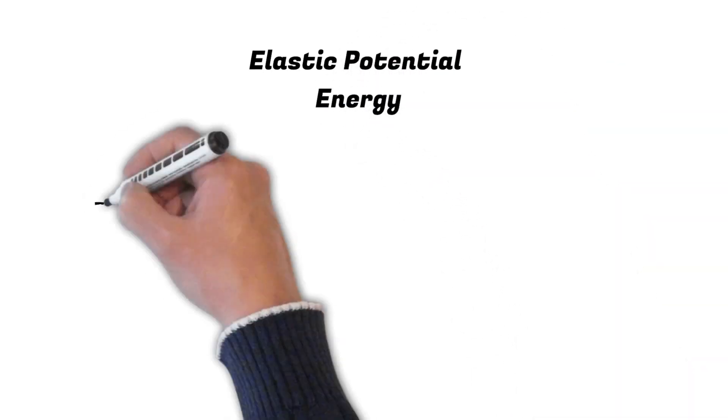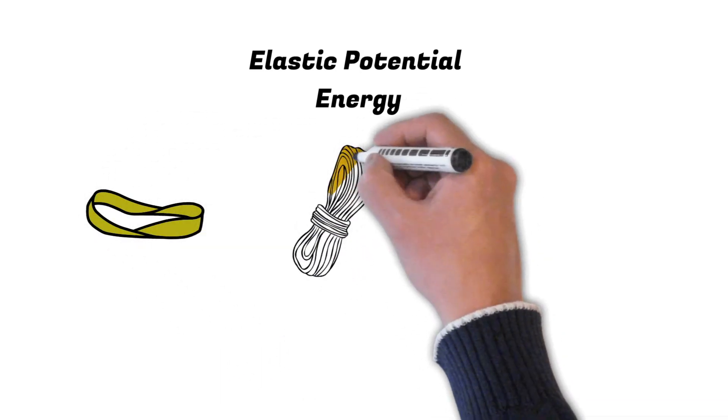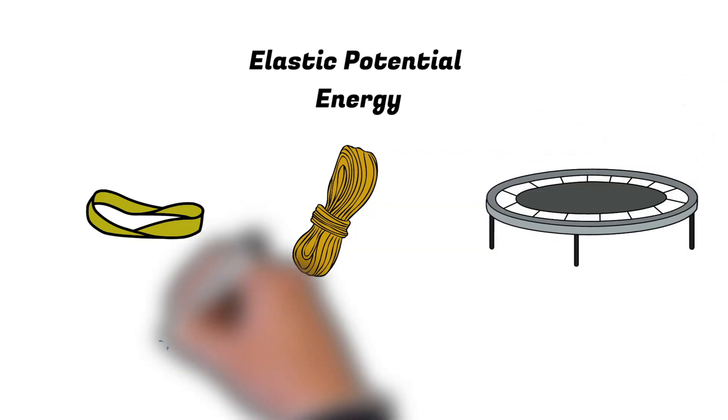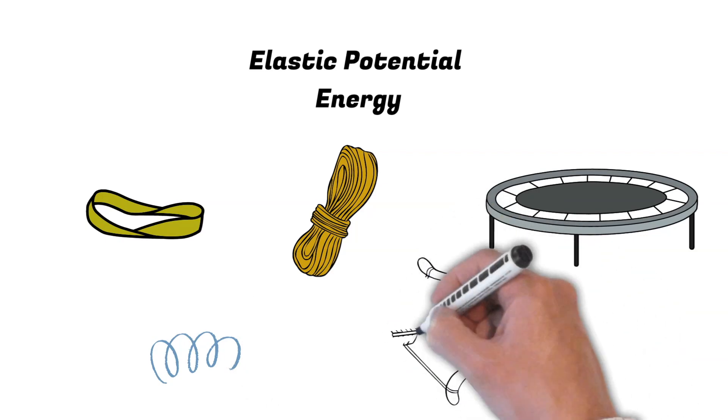Elastic potential energy can be stored in things like rubber bands, bungee cords, trampolines, springs, an arrow drawn into a bow, etc.